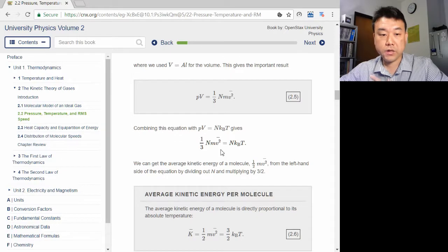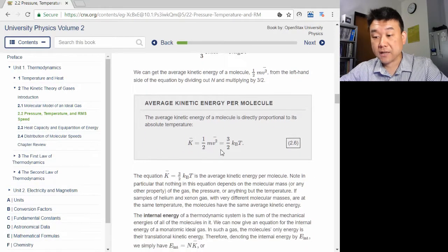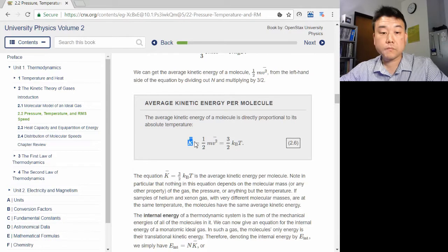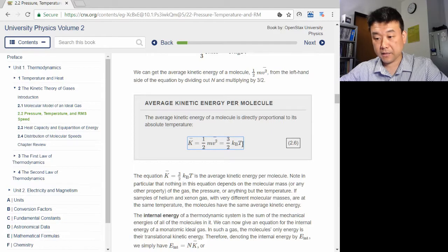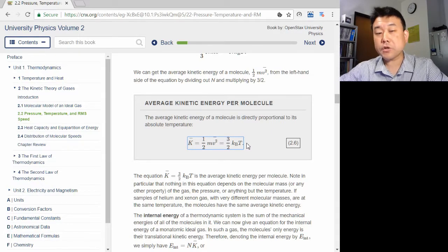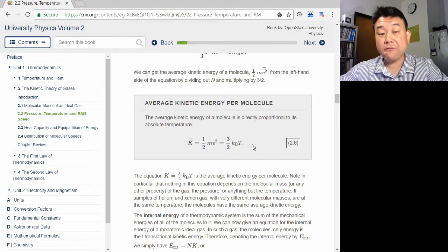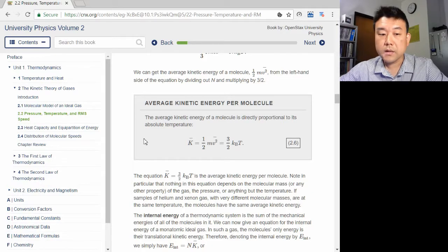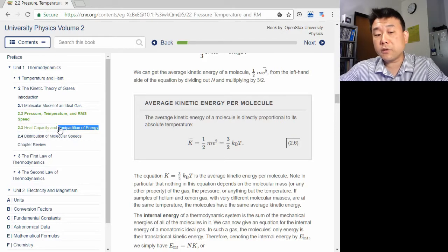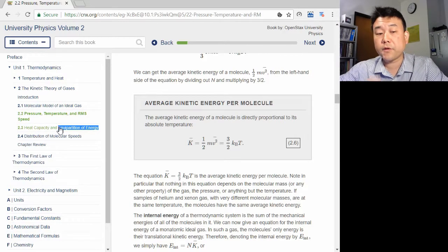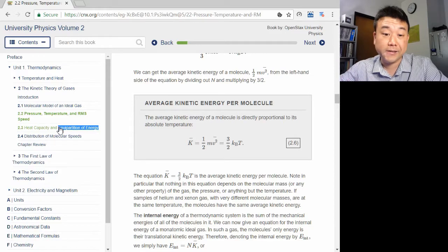Or rearranging to express the average kinetic energy of a molecule. Average kinetic energy of a molecule is three-halves kT. Temperature of a gas is directly related to the kinetic energies of the molecules in the gas. This relationship will be expanded using something called equipartition principle, equipartition theorem. And we will explore this more when we look at different heat capacities of an ideal gas in chapter 3.